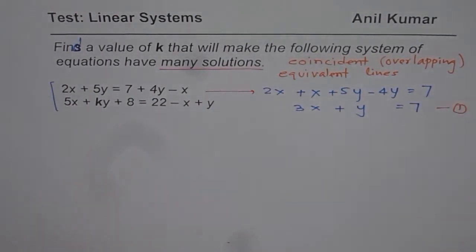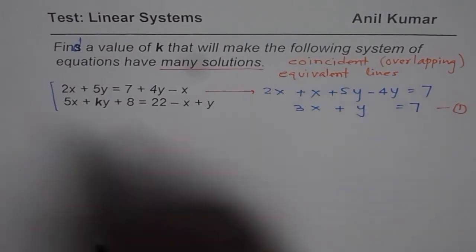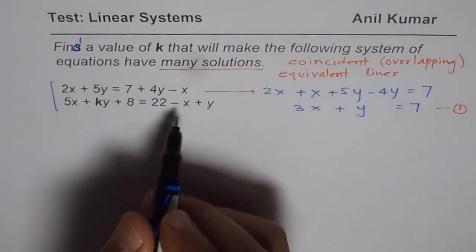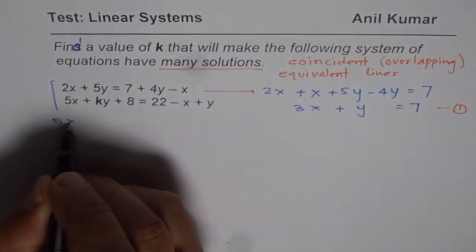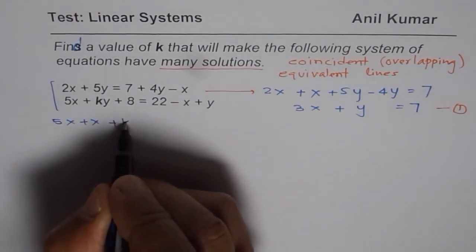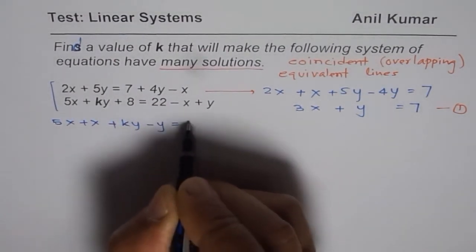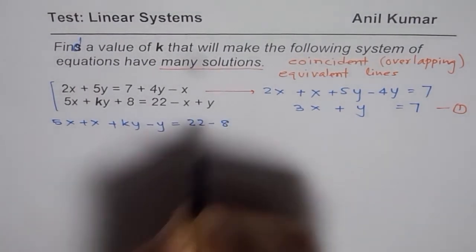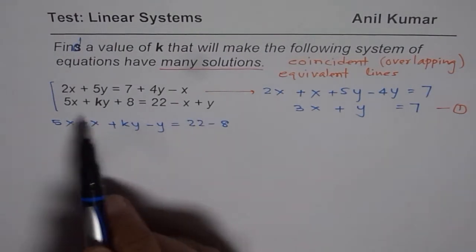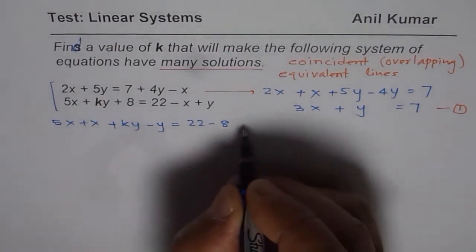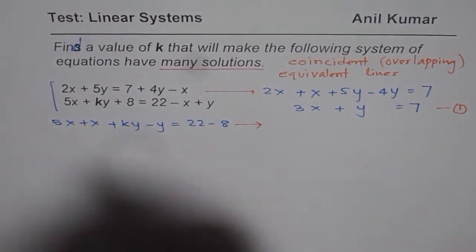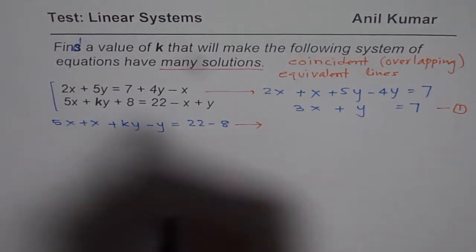Now let us simplify the other one. So we will bring all these terms to the left side with variables. So we have 5x plus x. As far as y is concerned, ky minus y. We move this constant to the right side, brought these variables to the left side. So we can write this as second equation...